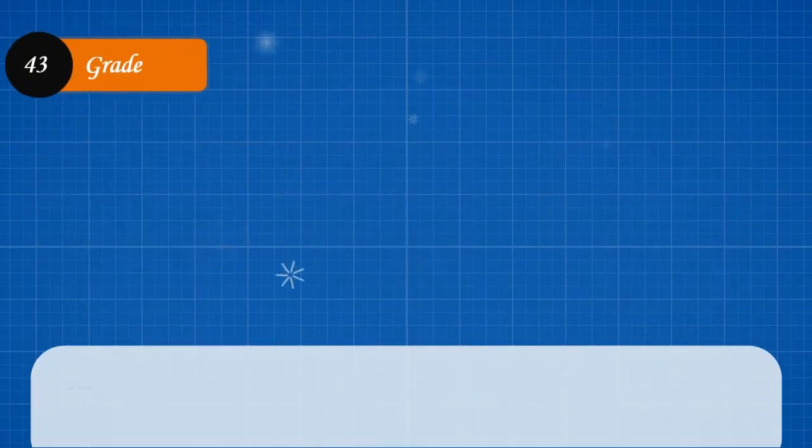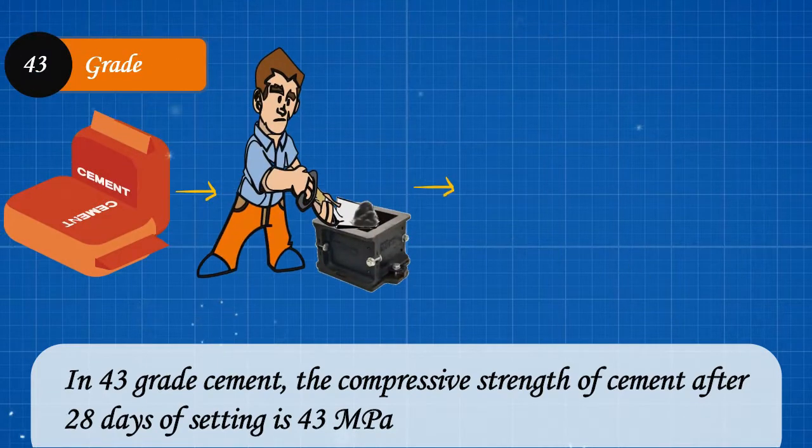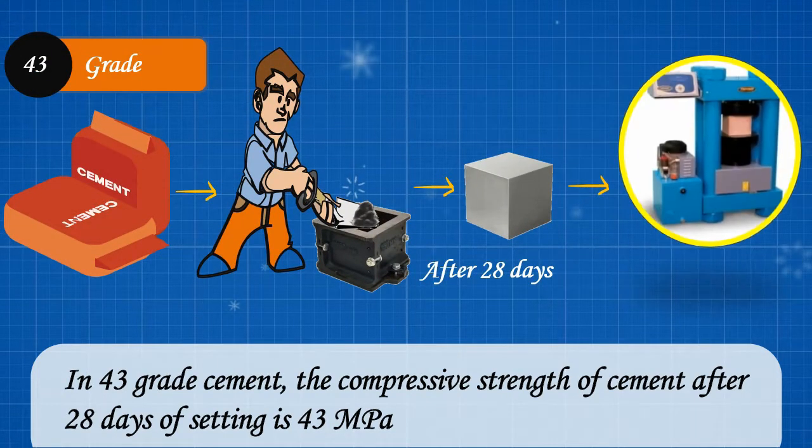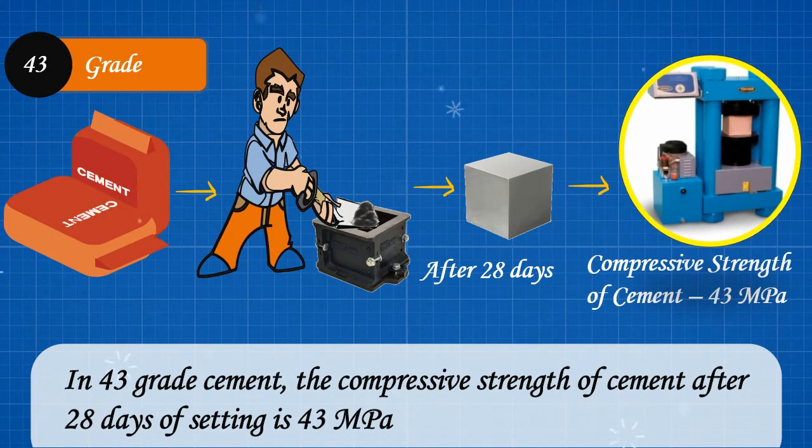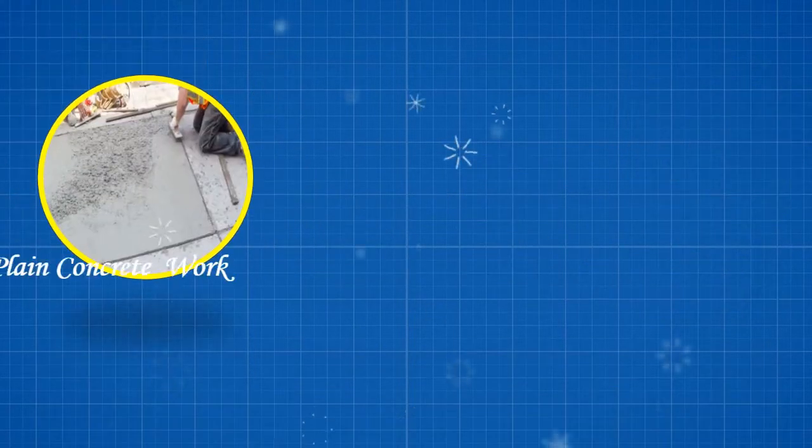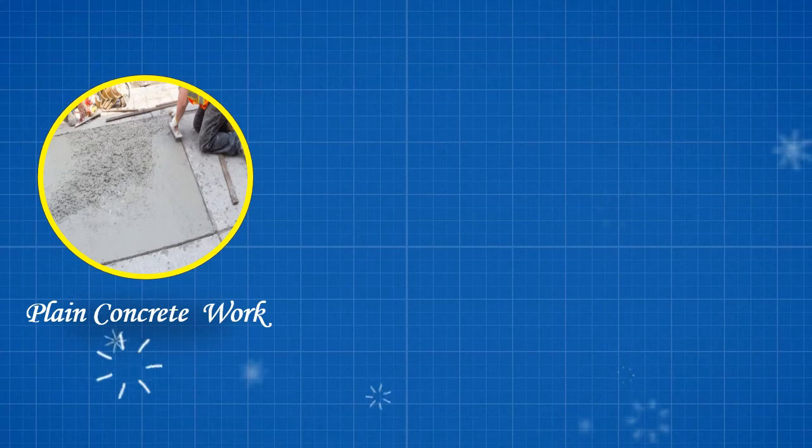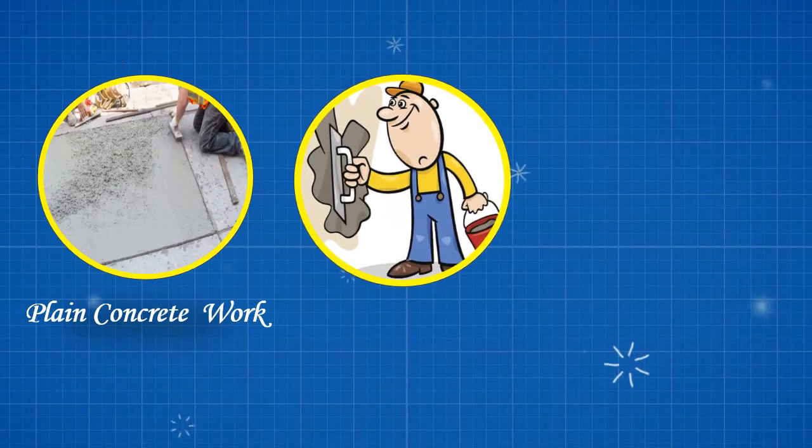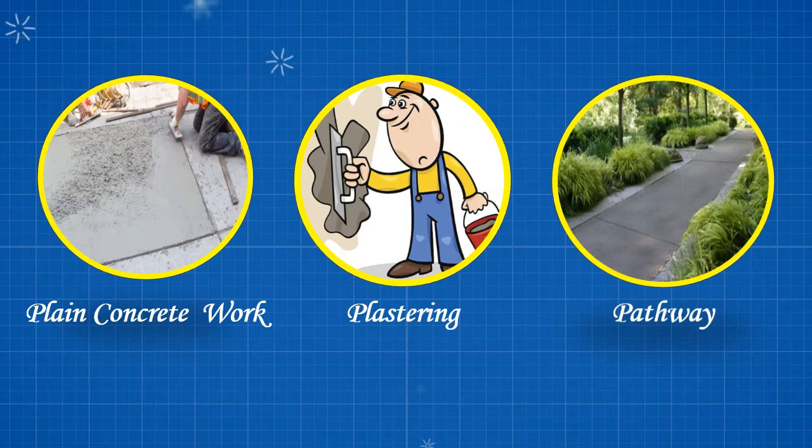In 43 grade cement, the compressive strength of cement after 28 days of setting is 43 megapascal. This type of cement is used for plain concrete work, plastering, pathway, etc.